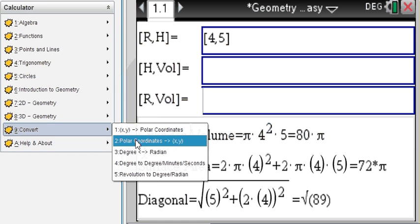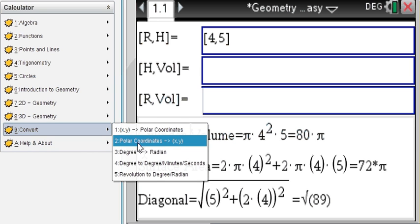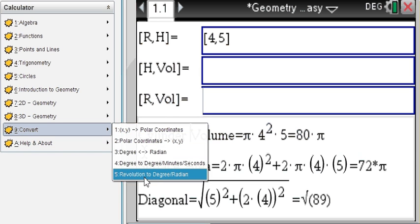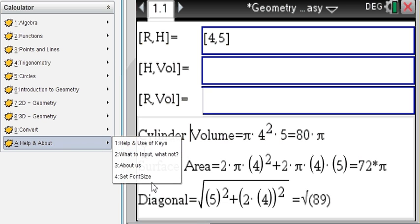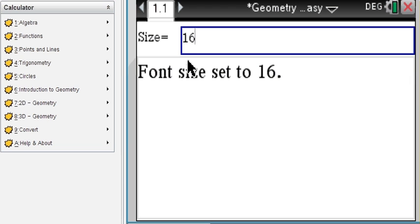And lastly, you can also convert rectangular to polar coordinates and back, degree, radian, all of this step by step. And you can even, if your eyes are not that good anymore, you can increase the font size, so everything is easier on your eye.